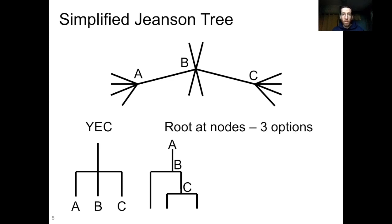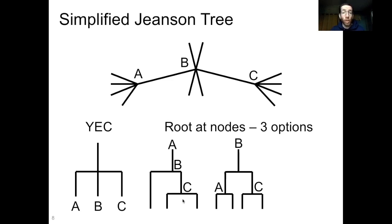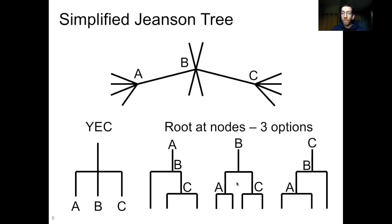If you root the tree at node A, you don't get three coexisting individuals. You get a situation where B is descended from A, and C is descended from B. A represents the root, the first group branches off, B is among them, and then C is nested within B's descendants. That doesn't work. What if we root it at B? This is essentially a midpoint root, and you see two branches where A and C are both descended from B — that doesn't work either. And if you root it at C, you get the reverse of A: C at the root, then B descended from C, and A descended from B. None of these are compatible with the YEC interpretation.